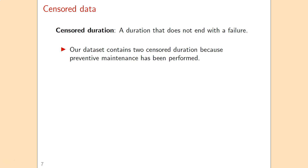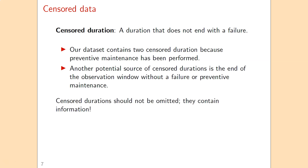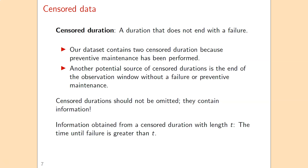We talk about censored durations when a duration does not end with a failure. This happens when preventive maintenance has been performed, or when we stop observing the machine without a failure or preventive maintenance action occurring. It is very important that we do not omit censored durations, because they contain information. What we learn from a censored duration of length t is that the time until failure is greater than t. If we ignore it, we underestimate the reliability of the machine.